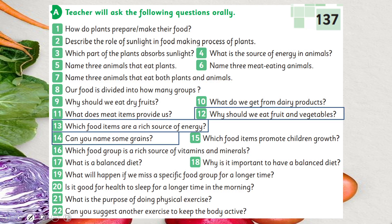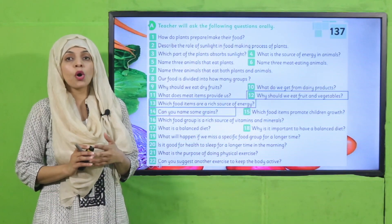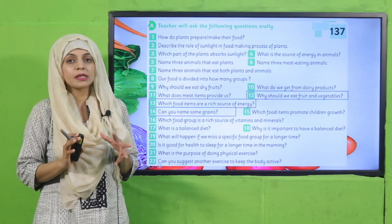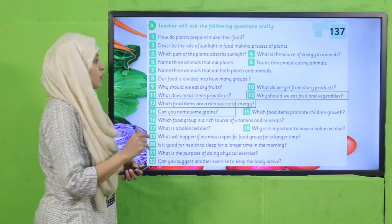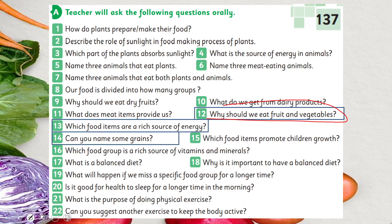Now is the time for evaluation. We will move forward to page number 137, and I will ask questions orally for you to answer orally. Question 12: Why should we eat fruits and vegetables? Because they are a great source of vitamins and minerals. Which food items are a rich source of energy? Grains — because they have carbohydrates in them.